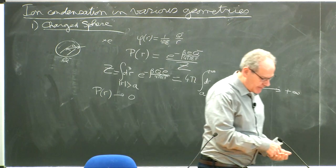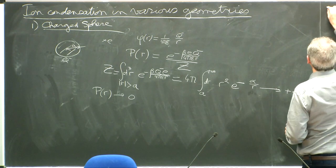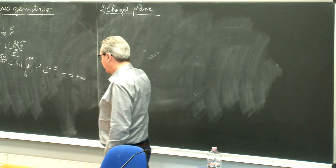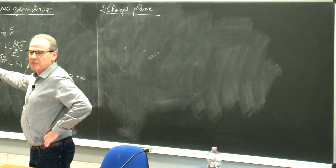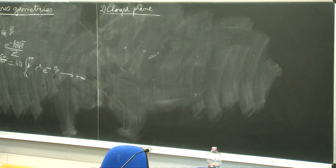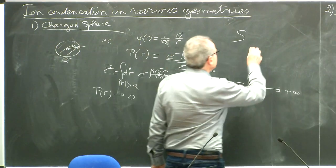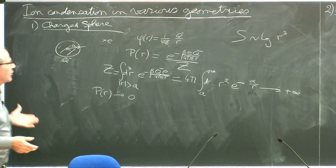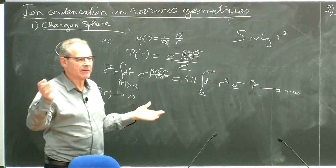The other example is a charged plane, which we studied yesterday. The physical reason why the particle is not bound to the sphere is that the attraction of the particle goes like one over R, so when R goes to infinity it goes to zero. Whereas the entropy of the particle, which is in the whole volume, goes essentially like the log of R cubed, like the log of the volume. So the entropy diverges and will always be much larger than the electrostatic energy. Therefore the particle is not localized — it just goes away.